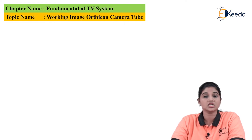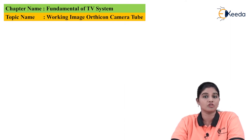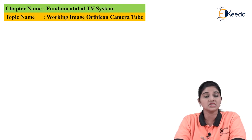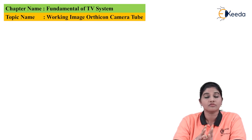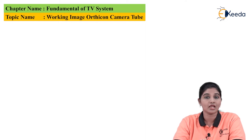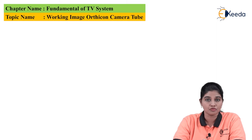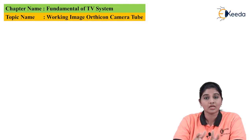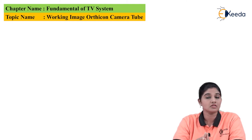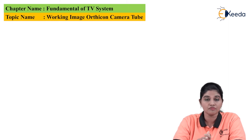The image orthicon camera tube operates on the principle of the photo emission property of the material. Some materials have the property to emit electrons whenever light is incident on the surface. The emitted electrons are called photoelectrons and the emitting surface is called the photocathode. Light consists of a bundle of energy packets called photons.